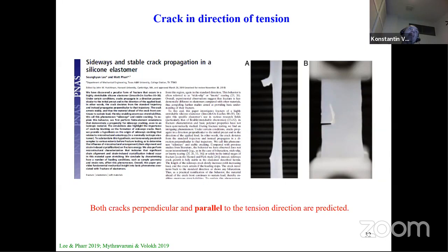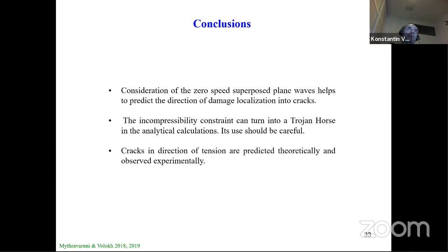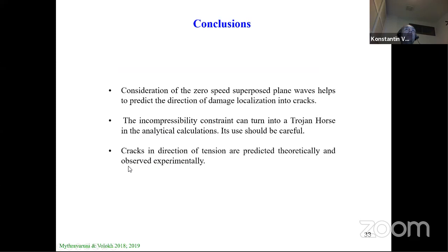So rubber cracks may propagate in the direction of tension. Consideration of zero-speed superposed plane waves helps predict the direction of damage localization into cracks. The incompressibility constraint, very often used for soft materials, can turn into a Trojan horse in analytical calculations. We found that the incompressibility condition suppresses pressure waves, but pressure waves are important for the prediction of cracks. So when you use the incompressibility condition, you should think twice. Cracks in the direction of tension are predicted theoretically and were observed experimentally — to our great surprise.